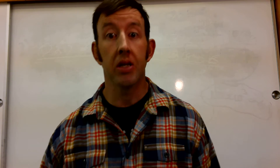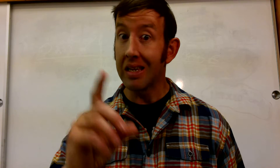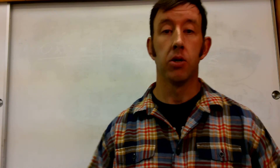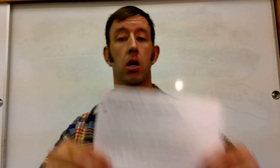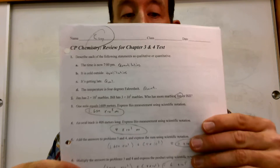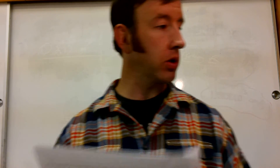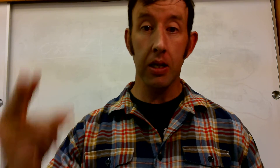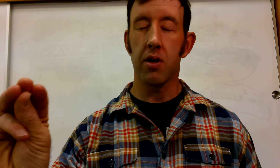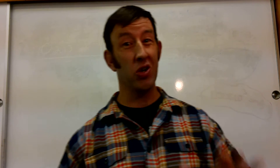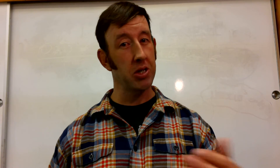All right, so we're going to have your last video tutorial for our sig-figs and dimensional analysis unit. Tonight, or today whenever you're watching this, we will be focusing on CP Chemistry review for chapters 3 and 4 test. On this particular test we're going to focus on problems 17, 18, and 19 — those are a group that go together — and then we're also going to do number 27 and number 30. We're going to try to get through five without taking too long.